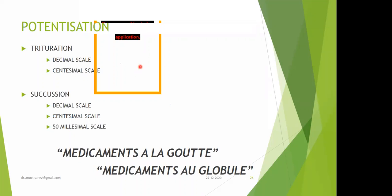Next is straight potency, which was described by Burt of London. He proposed that we can prepare 6X to 7X and from 7X to 8X — that is, each potency is raised step by step without jumping. That is straight potency.